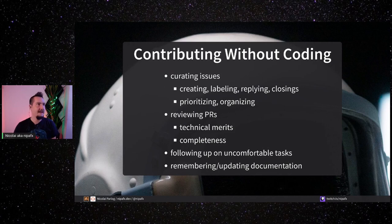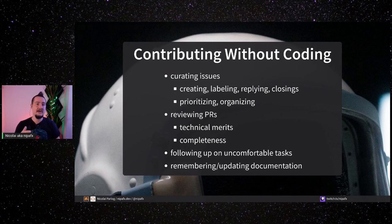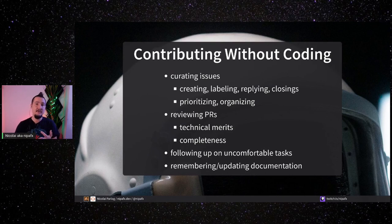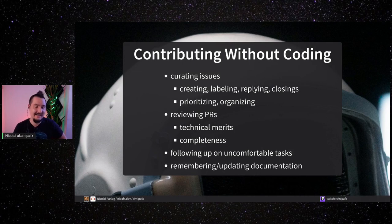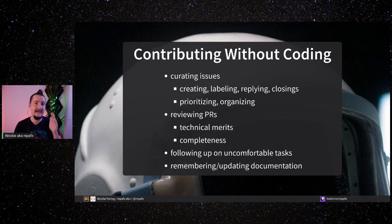Let's talk about project management. One important aspect — specifically important to Matthias when he joined — is finding a way to contribute without coding. He didn't feel comfortable contributing code in a distributed way, so he looked for another way. That's actually really handy because once a repository turns into a project, you have to do at least some project management — replying to issues, stuff like that. There are plenty of ways to contribute without coding, and in a sense these contributions are actually more important than code. You can curate issues: create them, label them, reply, close them, prioritize them. You can review pull requests — not just on technical merits but checking if documentation was added, if contributors added themselves to the list.